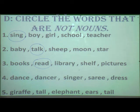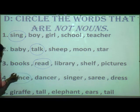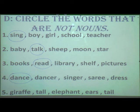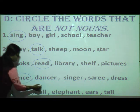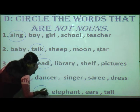Fourth group: dance, dancer, singer, sari, dress. Dance is a verb, so circle 'dance.' Dancer is a name given to a person who dances; dancer, singer, sari, and dress are nouns. Fifth group: giraffe, tall, elephant, ears, tail. These are all names, but tall is not a noun — it is an adjective. Circle 'tall.'